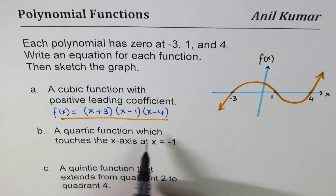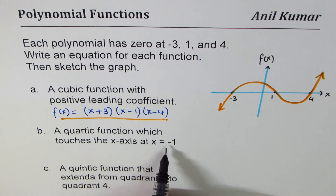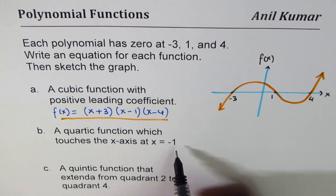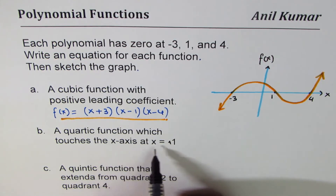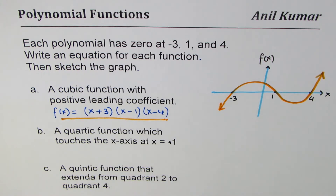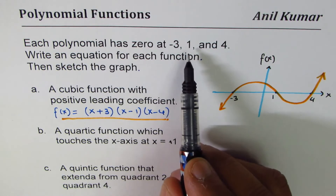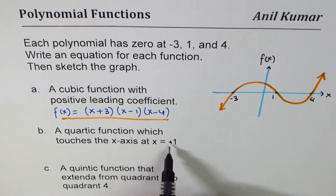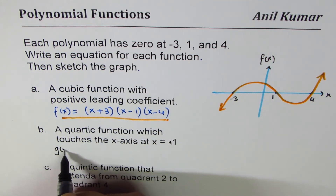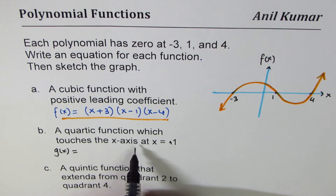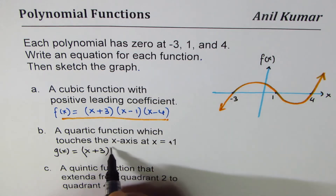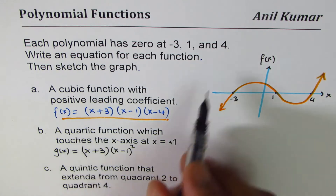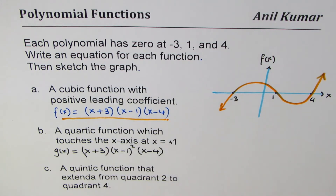Now let's do the next one. Quartic means degree 4, and it touches the x-axis at x equals 1 — I should note there is a correction: the touching point is at x equals 1, not minus 1. That was a typing error. Since the zeros are at minus 3, 1, and 4 — touching the x-axis means it turns at that point, so it is a degree-2 zero. We write g of x equals: x plus 3 for the zero at minus 3, then x minus 1 whole squared (giving two zeros at 1, making it quartic), then x minus 4.